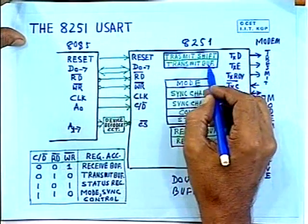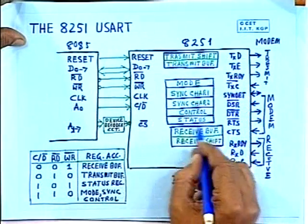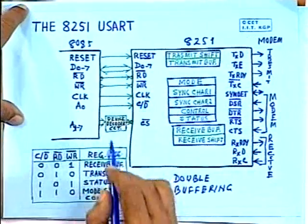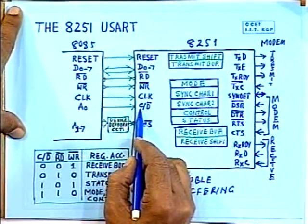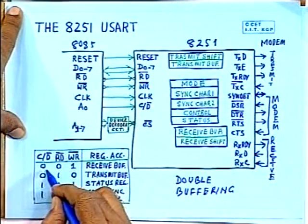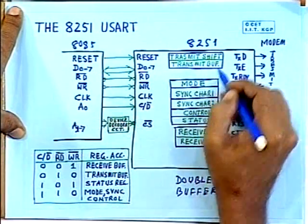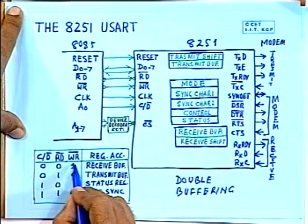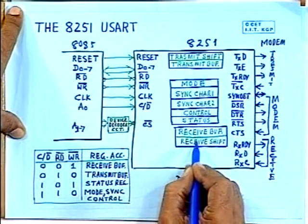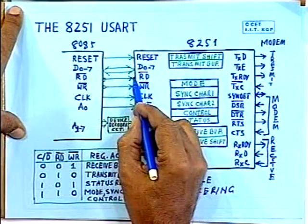The microprocessor can access either the transmit buffer or the receive buffer. To do that, the C/D bit must be 0 (data mode). When C/D = 0 and you are reading, data comes from the receive buffer; when writing, it goes to the transmit buffer. When C/D = 1, you access the command or status register.